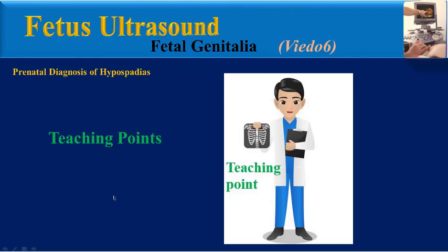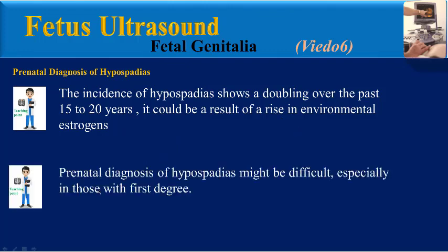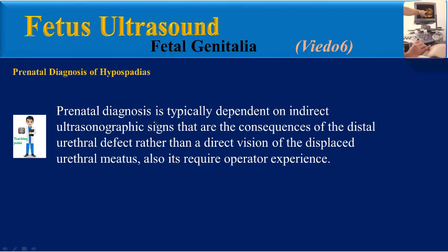Please pay attention to these final teaching points. The incidence of hypospadias shows a doubling over the past 15 to 20 years, possibly as a result of a rise in environmental estrogens. Prenatal diagnosis of hypospadias might be difficult, especially in those with first degree. Prenatal diagnosis is typically dependent on indirect ultrasonographic signs that are consequences of the distal urethral defect, rather than direct vision of the displaced urethral meatus, and it requires operator experience.